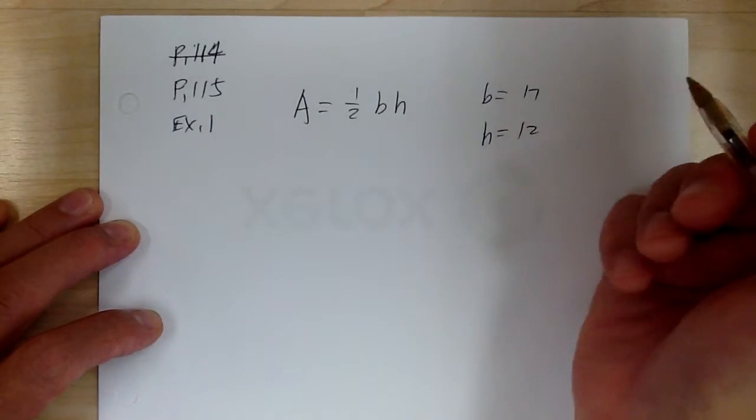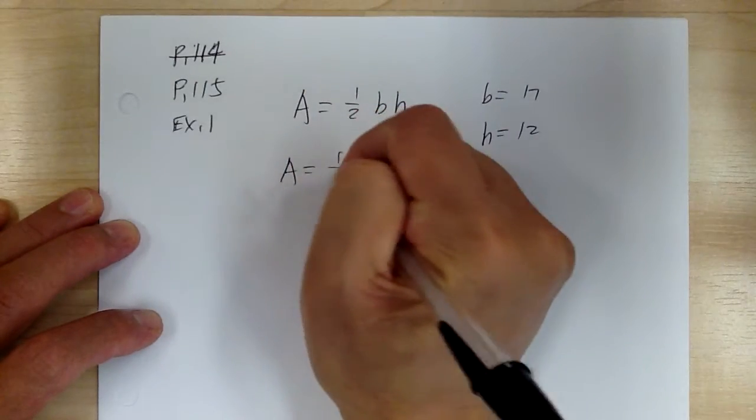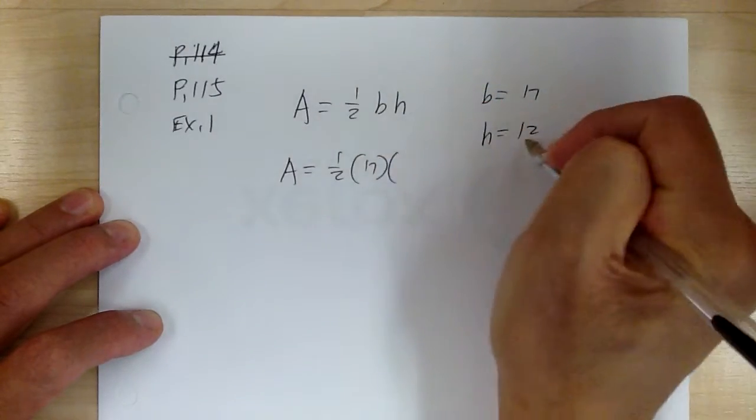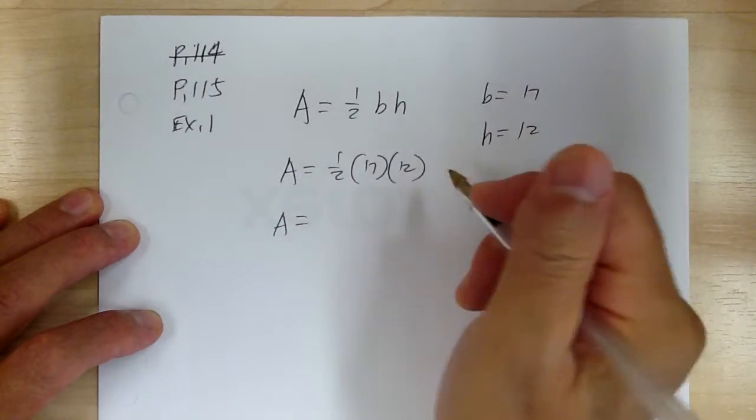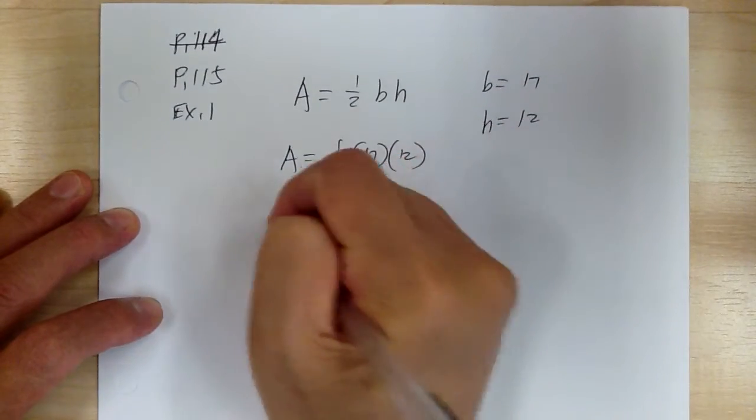So again, all you have to do is exactly the same thing. So area equal to 1 half, base is 17, and the height is 12. And so you can use your calculator. You can multiply out. So you get 102, and that's it.